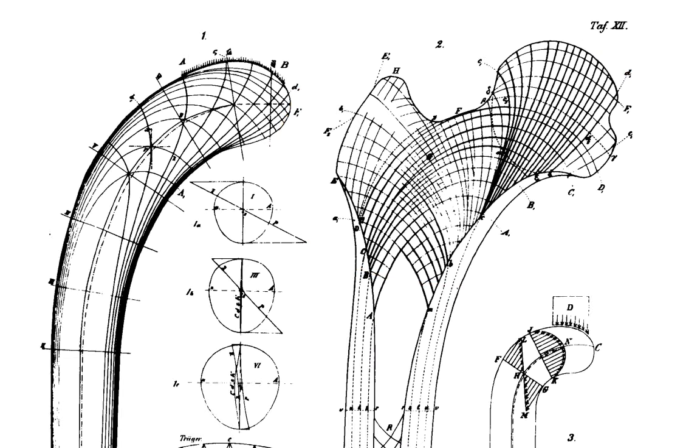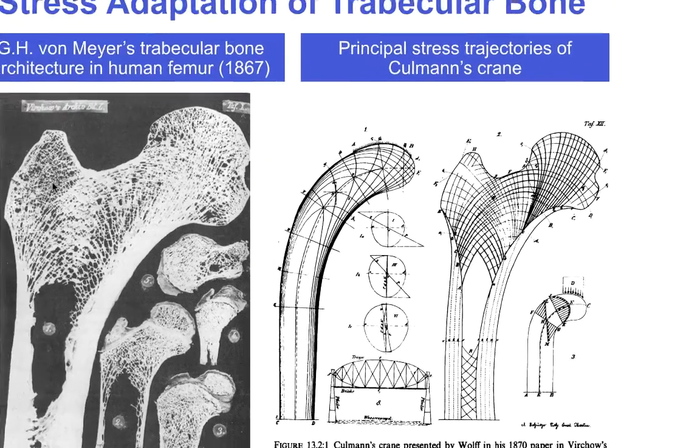In 1870, Wolff drew out these principal axes that he thought could be the principal stress axes for human long bone, and notice that this pattern corresponded with the pattern formed by the trabeculae in the trabecular bone.